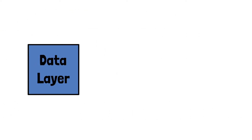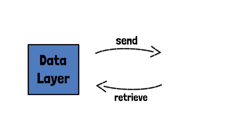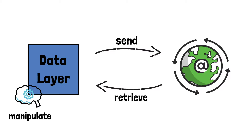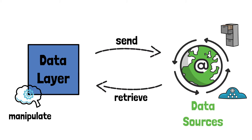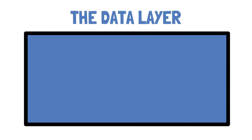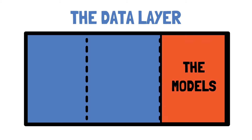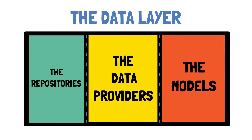The data layer has the responsibility of retrieving and also manipulating data from one or more sources, whether we're talking about network requests, databases, or other asynchronous sources. To do this, the data layer has been split up into three important sub-layers: models, data providers, and repositories. They are set up in this specific order because they will also be dependent on one another.